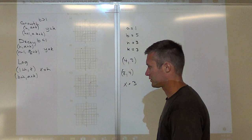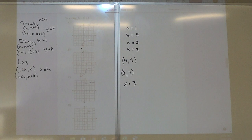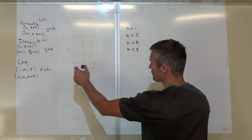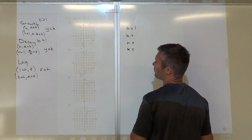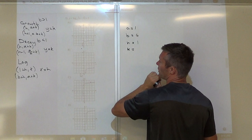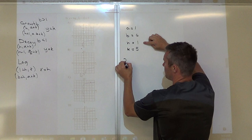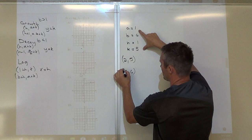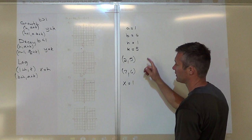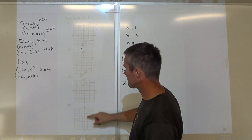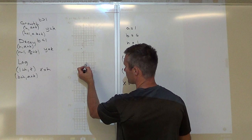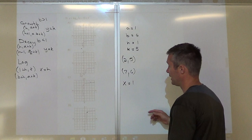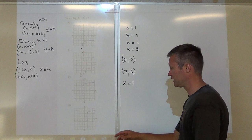For number 5, it's another log form — same process. A is 1, B is 6, H is positive 1, and K is 5. First reference point: 1 plus H is 2, and K of 5. Second reference point: B plus H is 6 plus 1 equals 7, and A plus K is 6. Vertical asymptote at X equals 1. It's either B or D. Over 2, up 5 — have that point. Then over 7, up 6 — right there. So D is my answer. Those are how you go through the first five problems — you can have your notes as you go through the test.